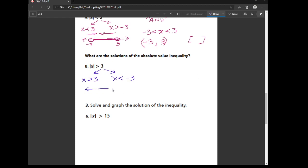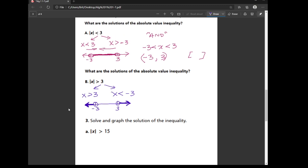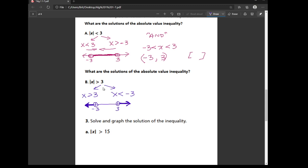So if I were to graph this, x is greater than 3 would get shaded to the right like this, and x is less than negative 3 would get shaded to the left like this. So do you see how the graph changed based off of the direction of the inequality symbol?